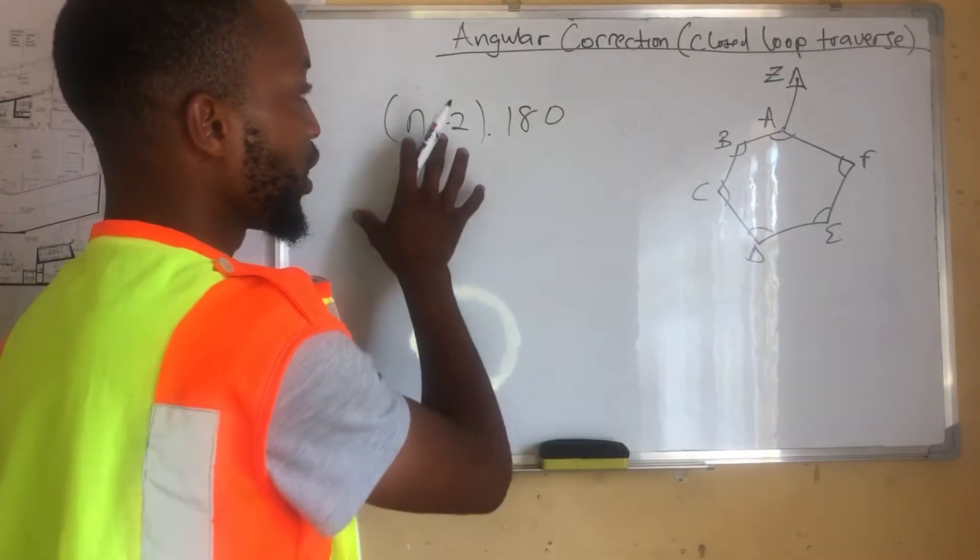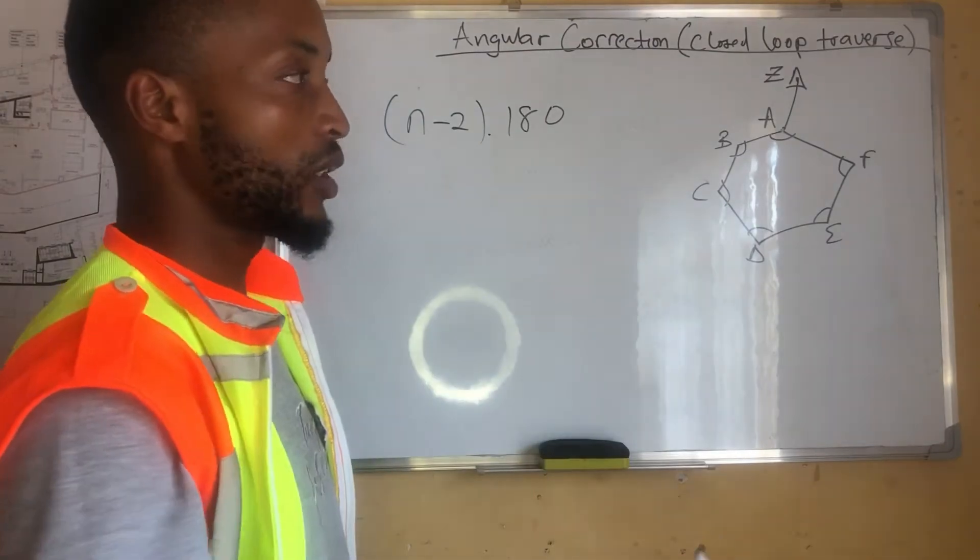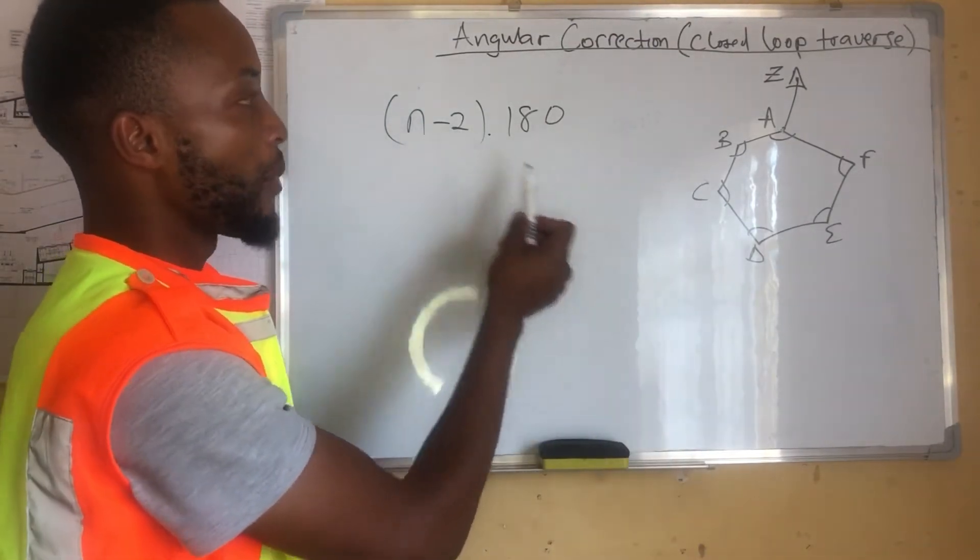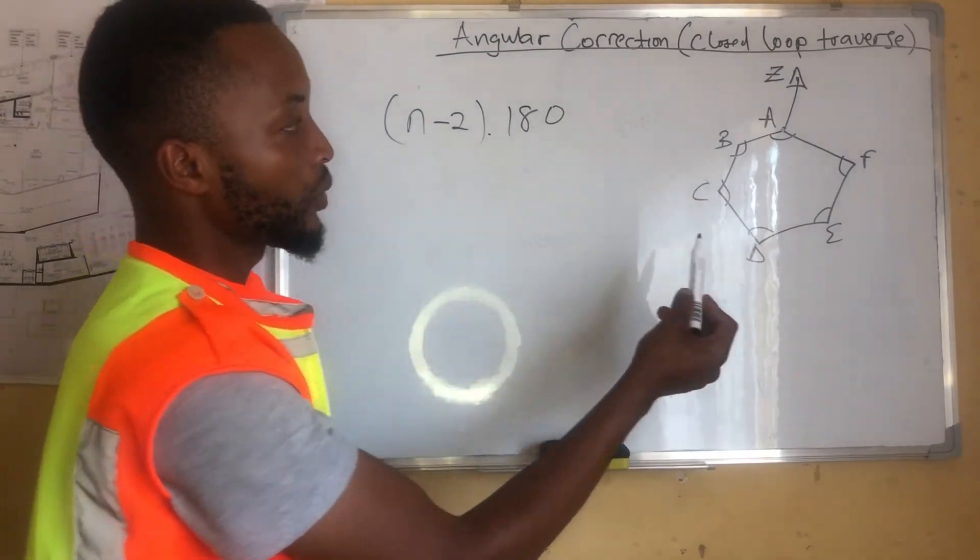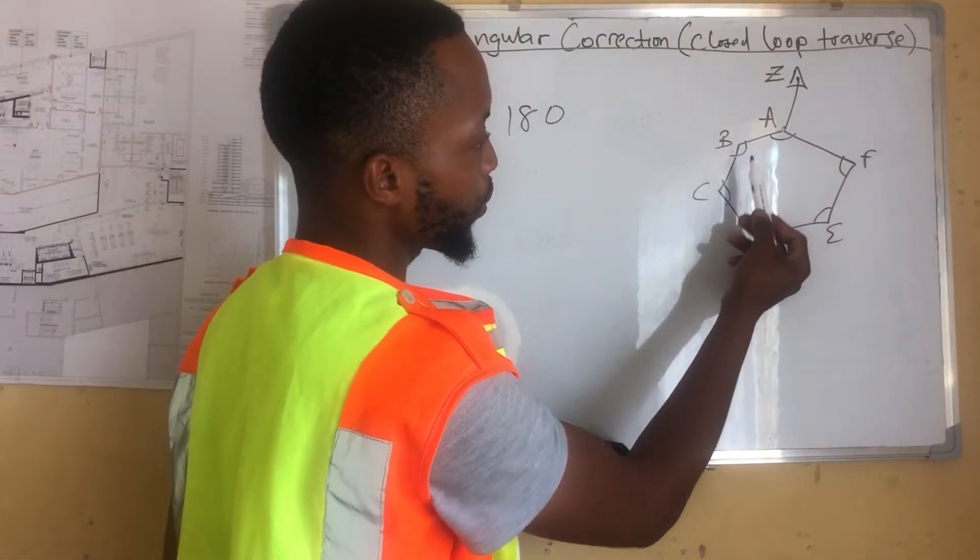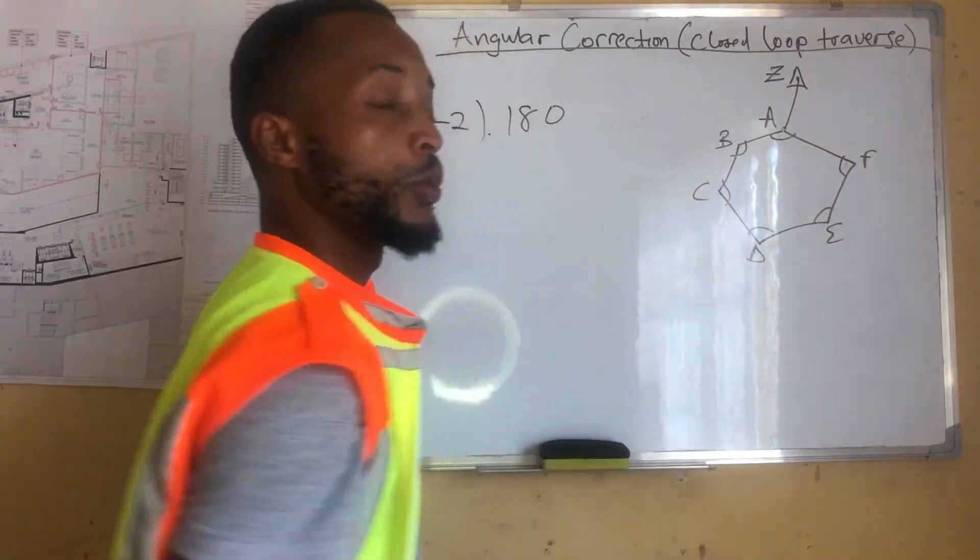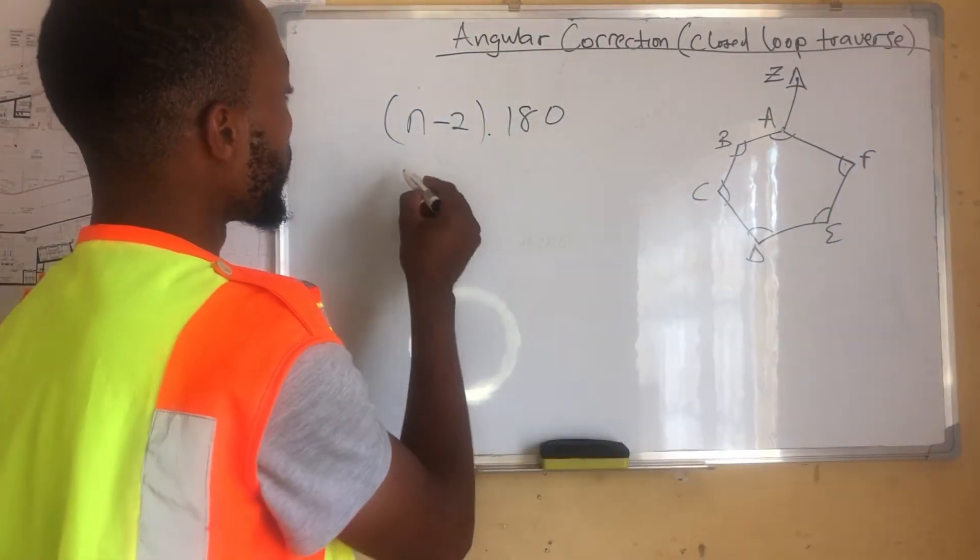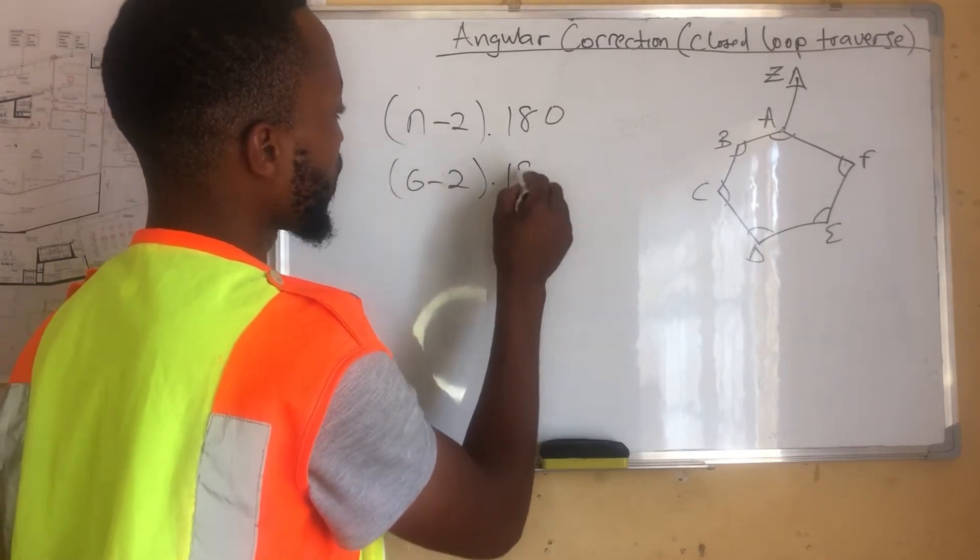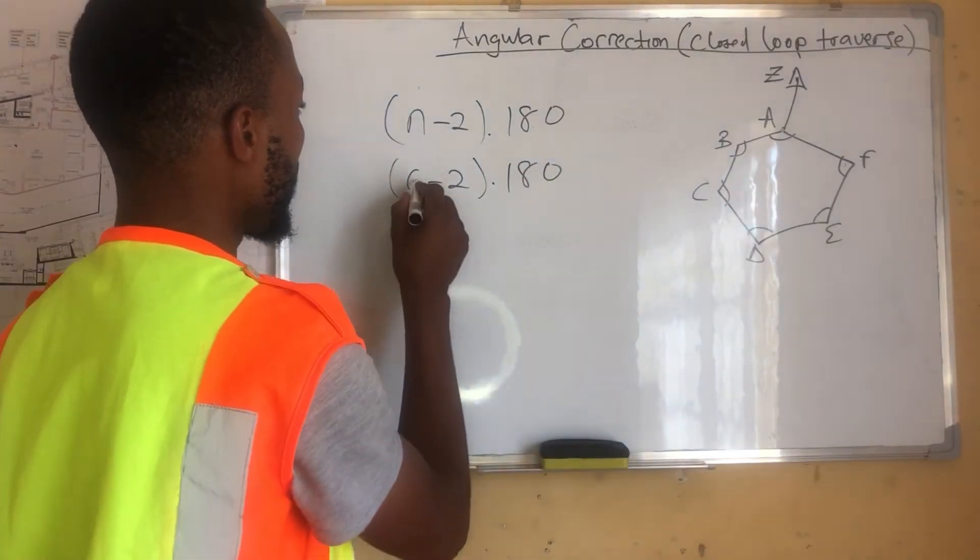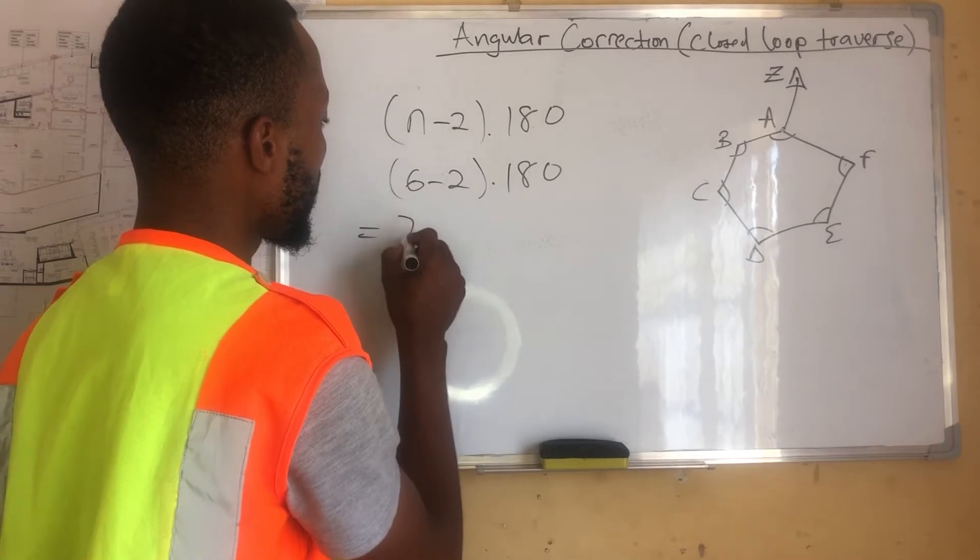But in this case, we will be dealing with this one. The n represents the number of angles in our polygon. In this case, we will come here and say 1, 2, 3, 4, 5, 6. We have 6 angles. Therefore,